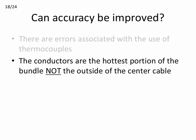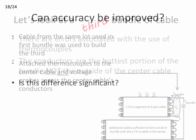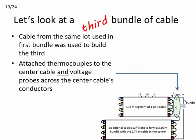But there are those that don't trust the data obtained using thermocouples. They'll point out, rightfully so, that it's the conductors in and not the jacket outside of the center cable that are the hottest portion of the bundle. To ensure that the thermocouple data is correct, we need a way to determine the temperature of the conductors and to determine if there is a significant difference between the conductor temperature and that recorded using the thermocouple method.